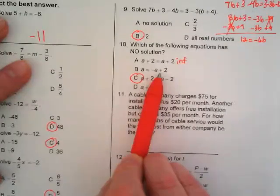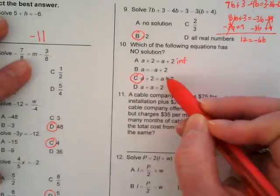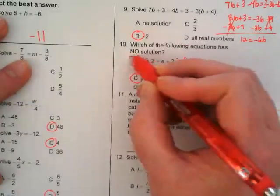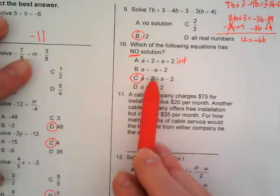A is not going to be equal to A plus negative A plus 2. If I add this A to both sides I'm going to get 2A equals 1, and I'm looking for something that has no solutions and this has a solution, right?